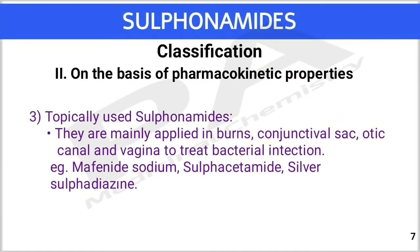The third type is topically used sulfonamides. They are mainly applied in burns, conjunctival sac, aural canal, and vagina to treat bacterial infection. Examples are mafenide, sodium sulfacetamide, and silver sulfadiazine.